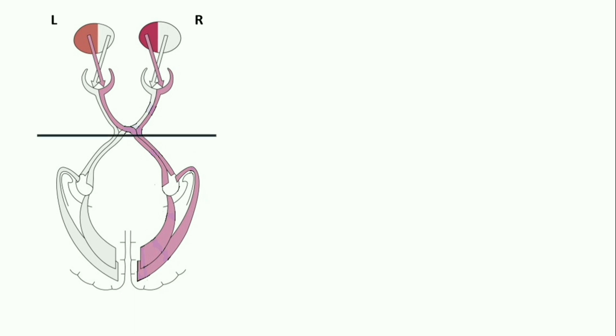Any lesion after the level of optic chiasm causes contralateral visual field defects. Lesion to left optic tract causes right homonymous hemianopia. Homonymous means same side of visual field.